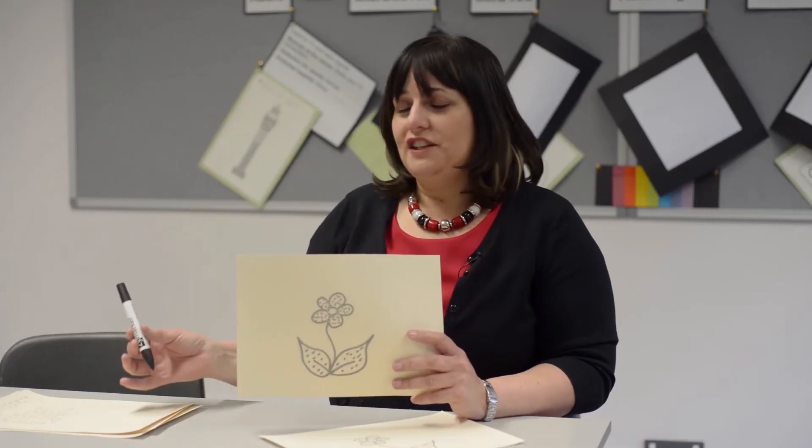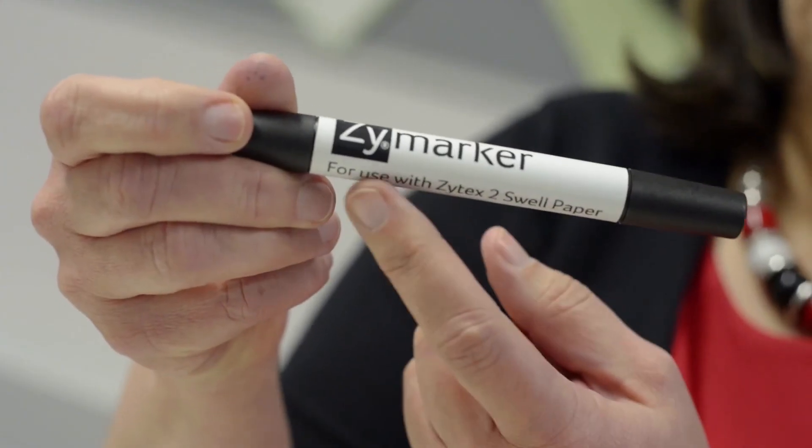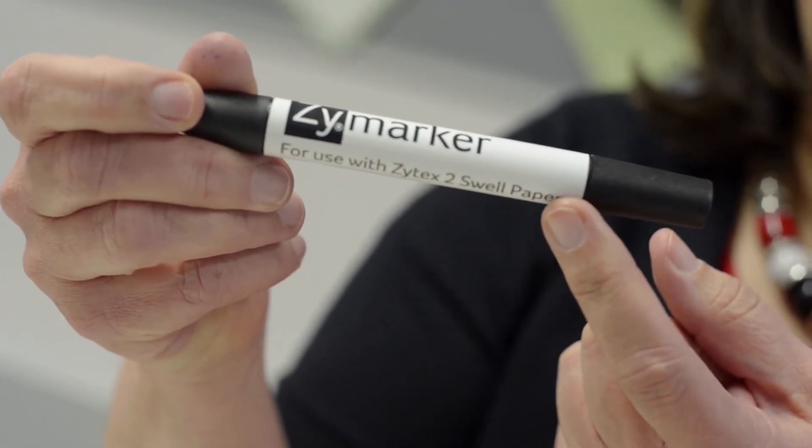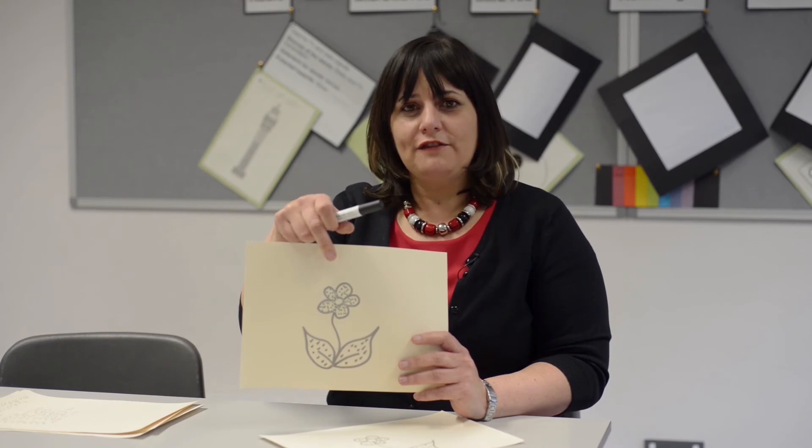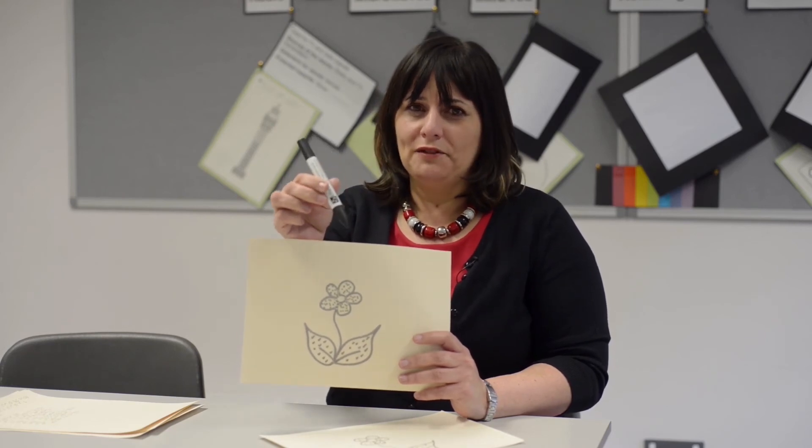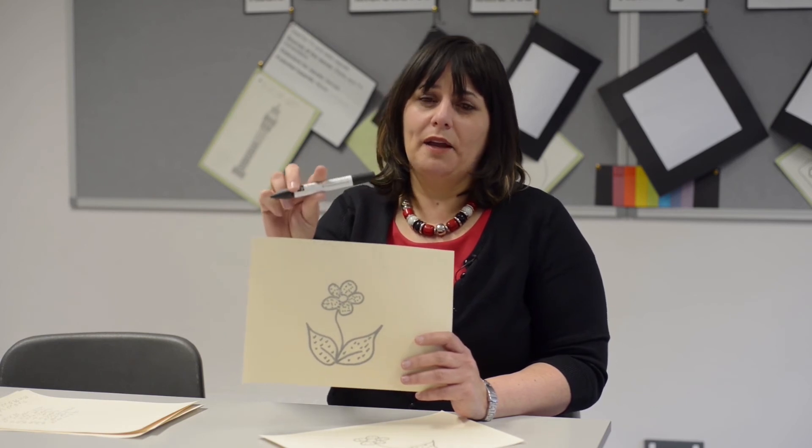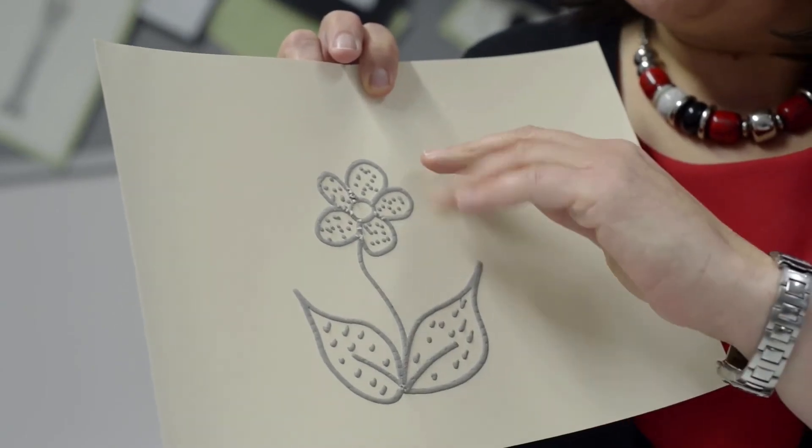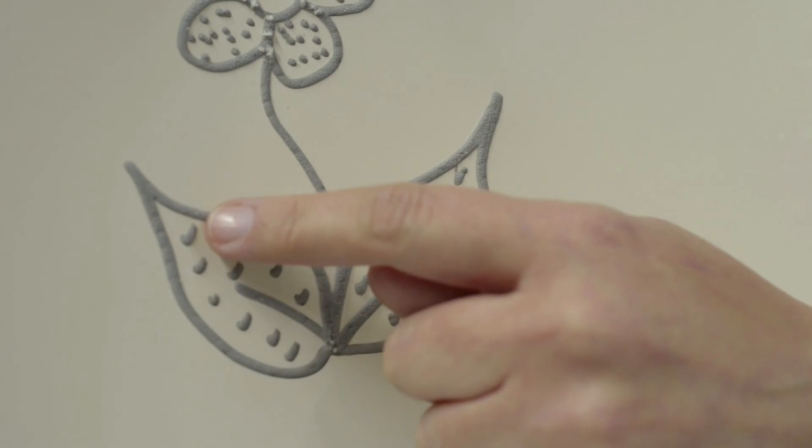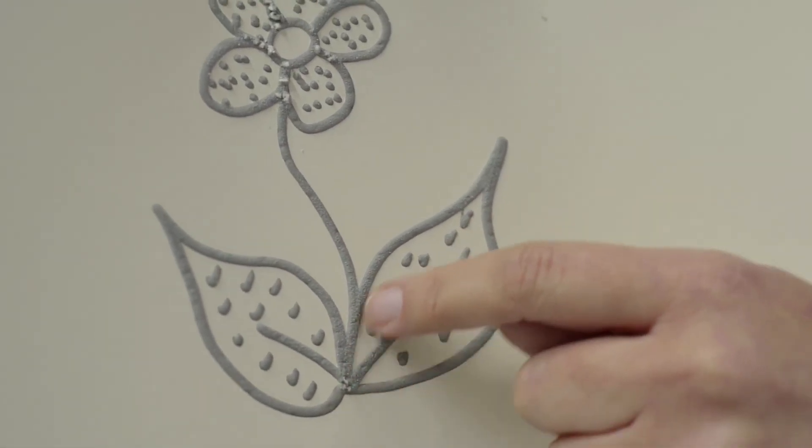Alongside printing your materials off on a printer you can also produce your diagrams freehand using a special pen that is designed to be used with swell paper. I've drawn this flower directly onto the paper using this pen and this can be placed then into the swell paper heat fuser. I've added my own shading in there just to make the distinction between the leaves and the petals.